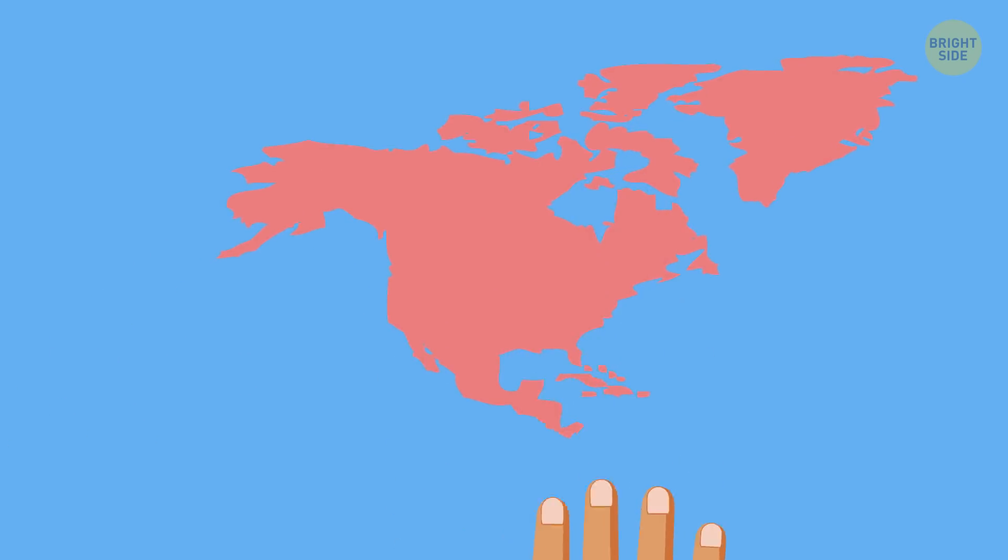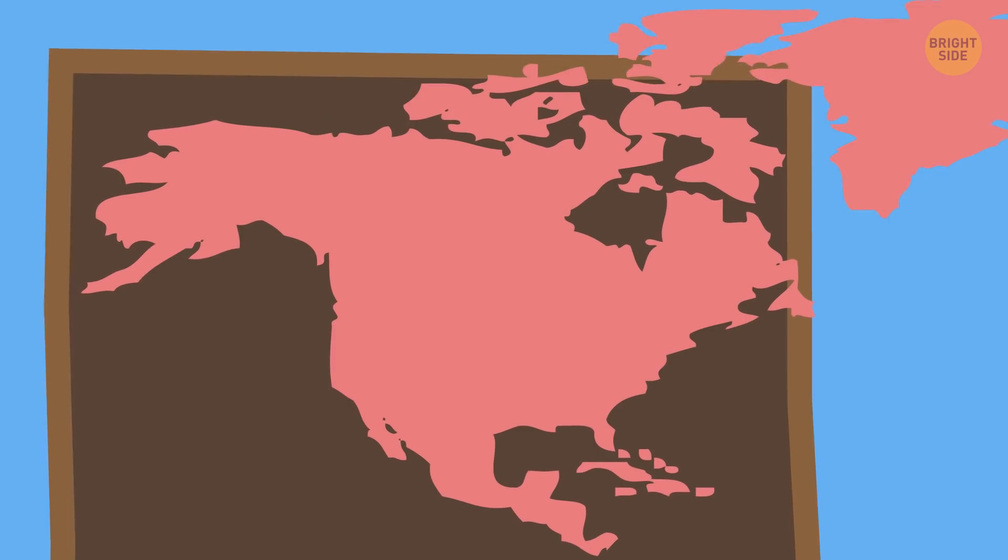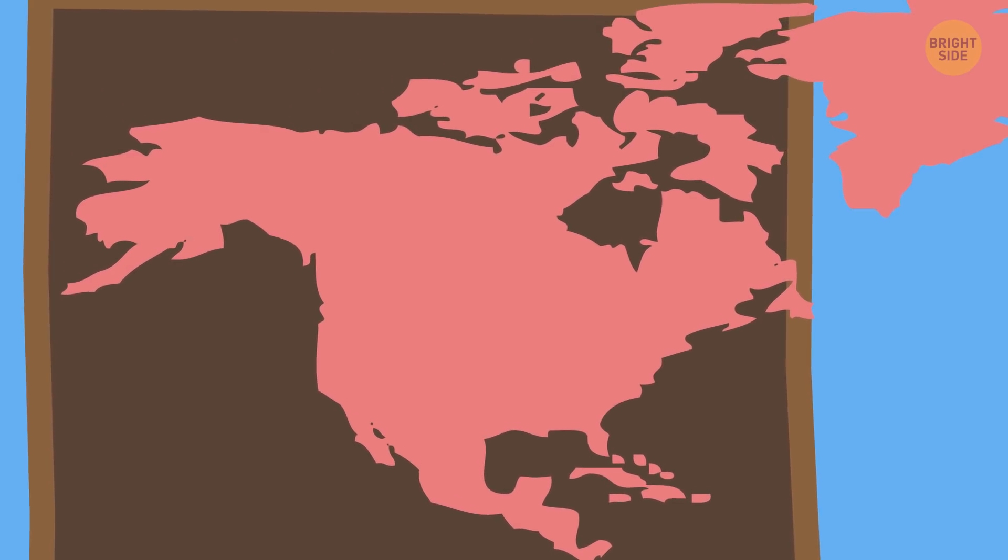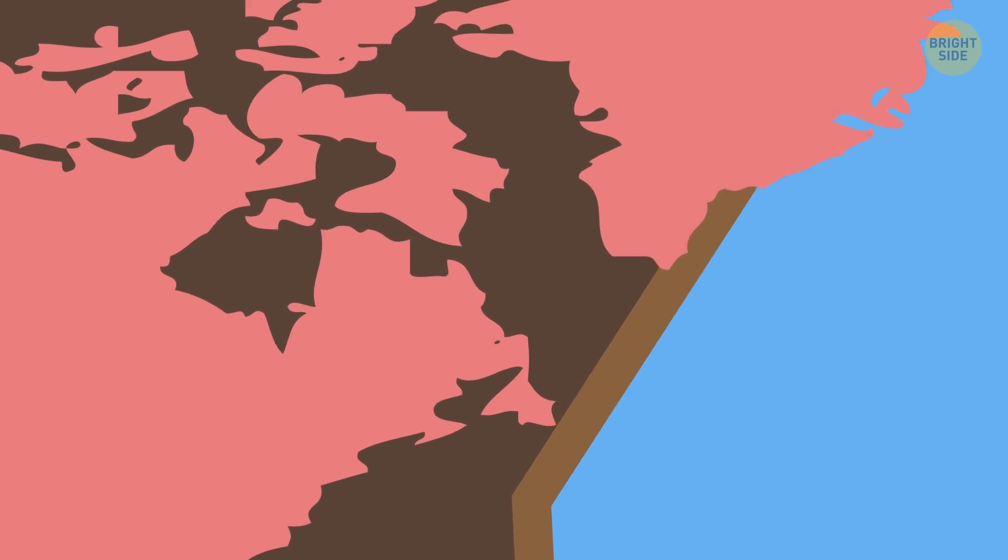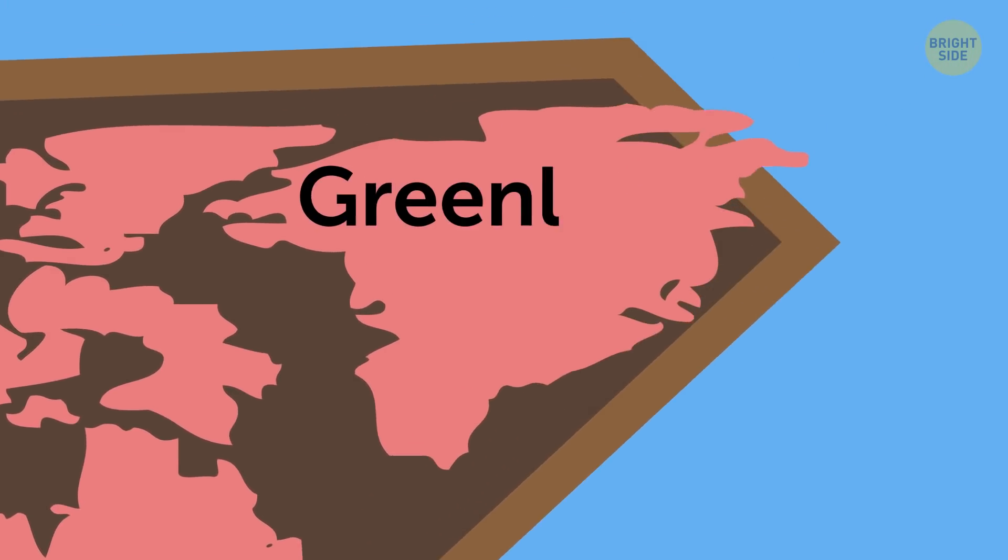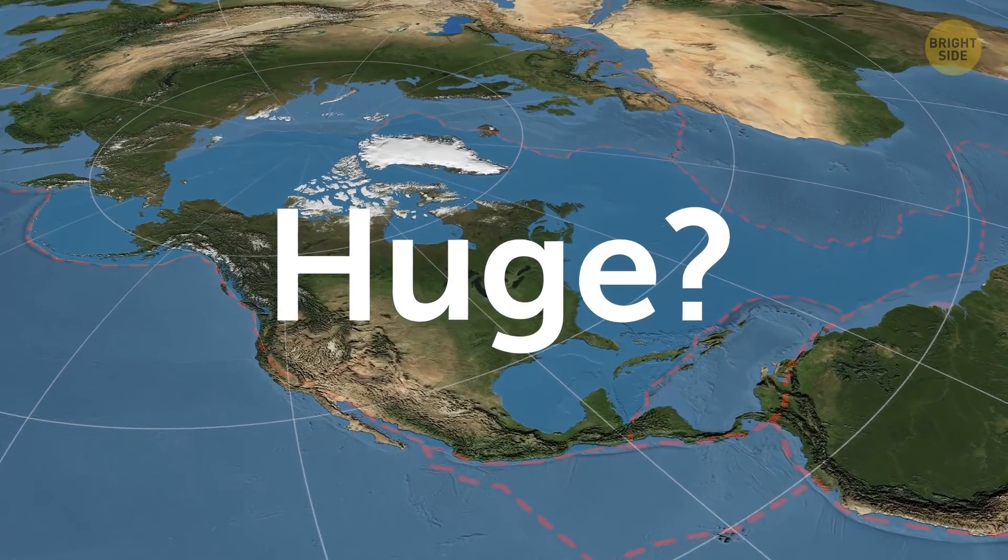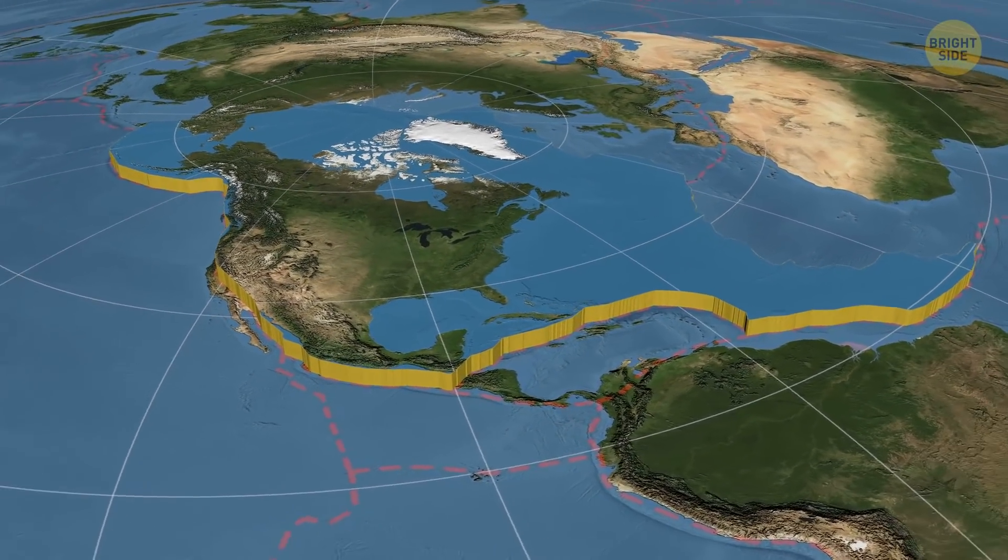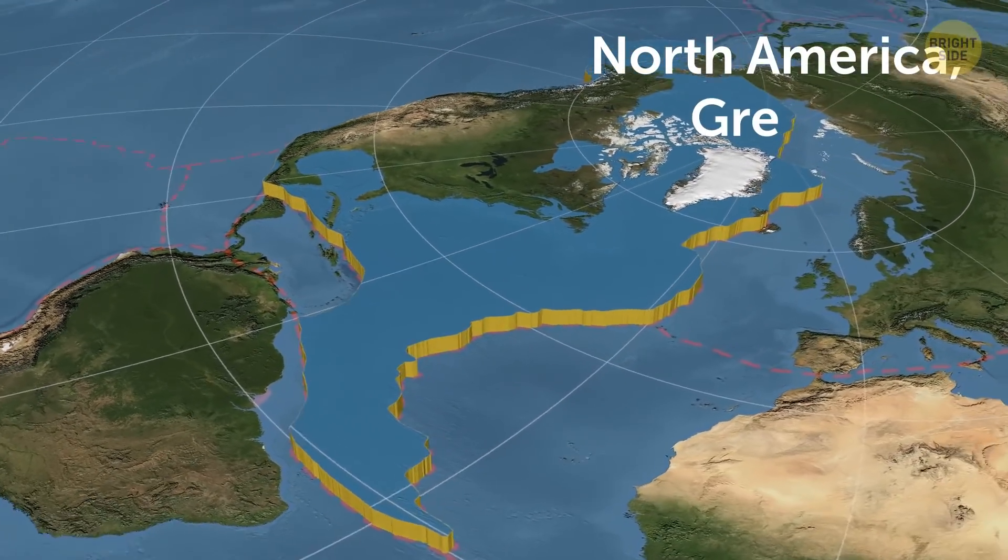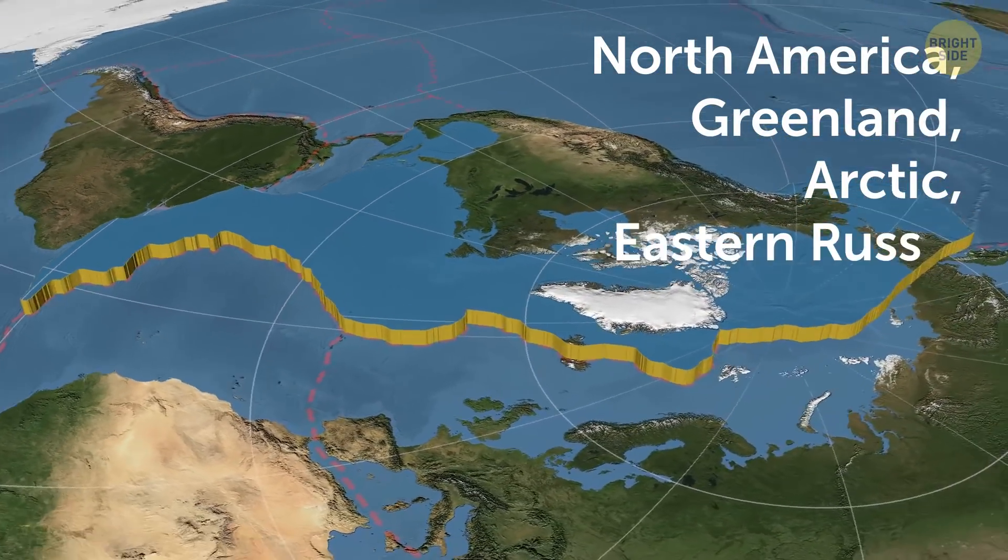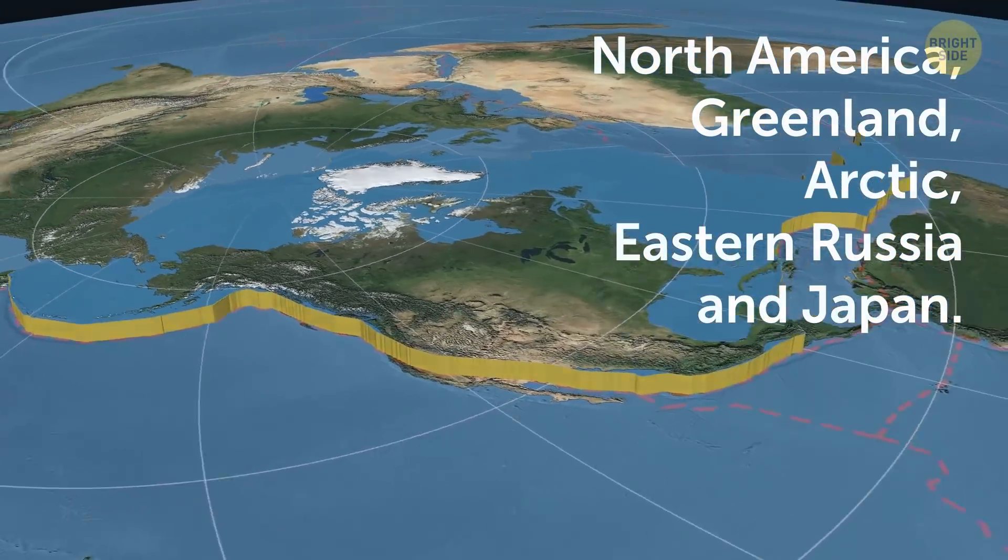Let's take one of the biggest of them to understand the sheer size of those things. Take a world map and find North America on it. It's part of the North American plate, but not all of it. The plate beneath the continent of North America spreads to the northeast and covers the whole of Greenland and its coastal waters. Huge? Sure is. But that's not all.